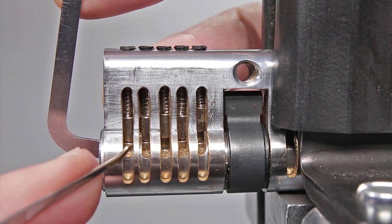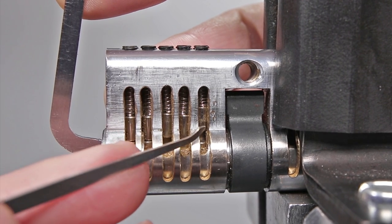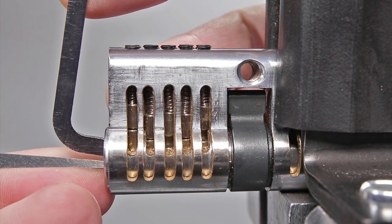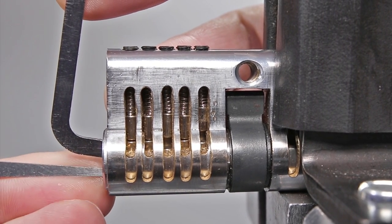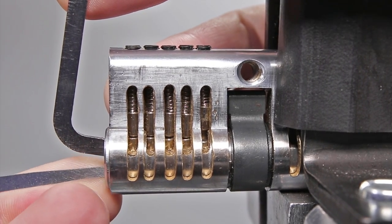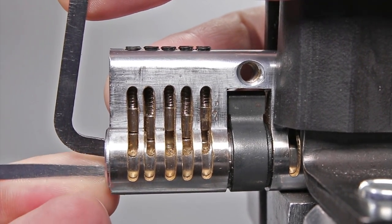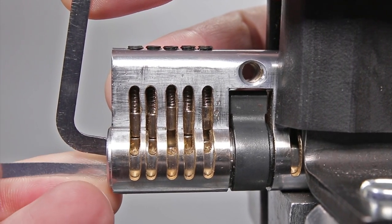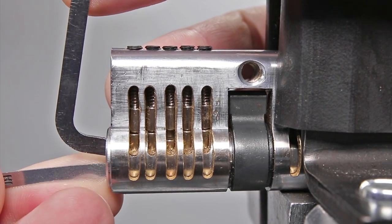All right, so you can see that keypin one has dropped back down. All of the driver pins remain where they were before, and now let's see what it takes to get this lock open. So, one still feels loose, two still feels loose, three, that was underset, that feels set, four, it's binding up...